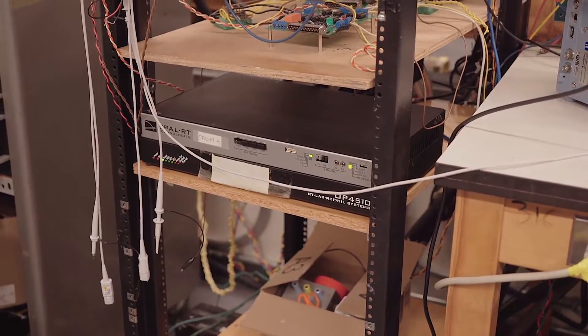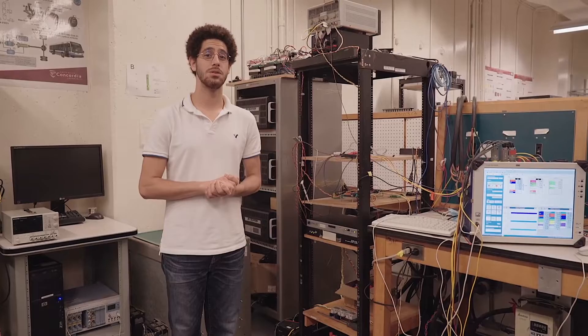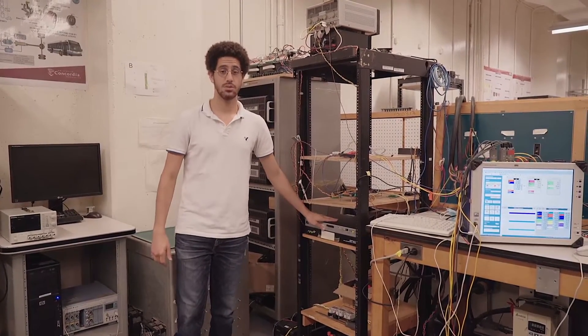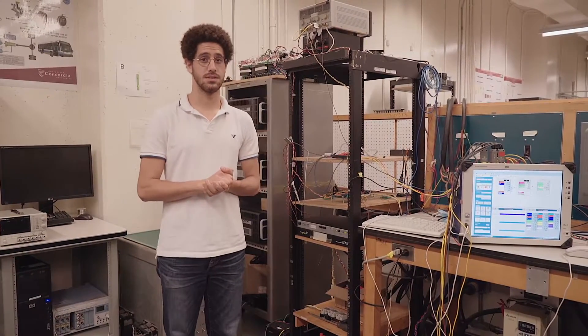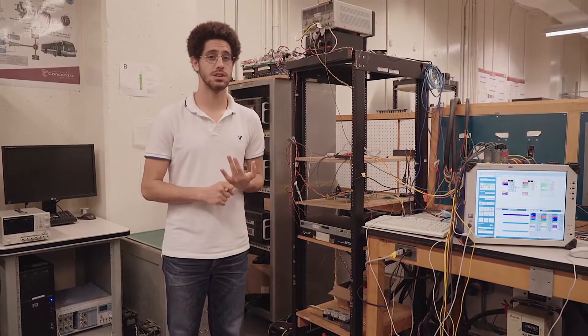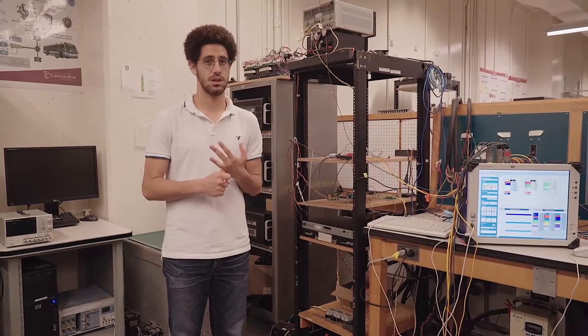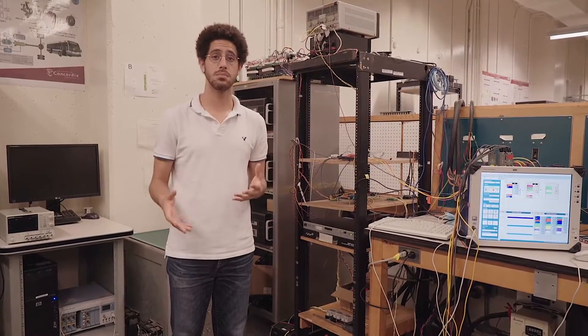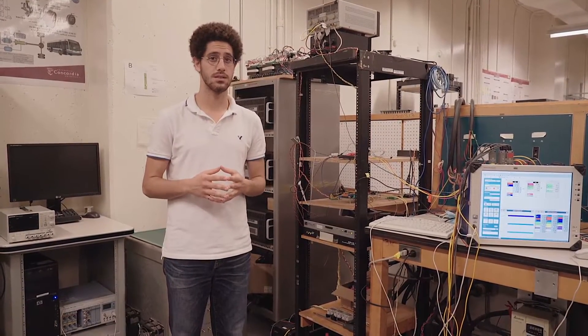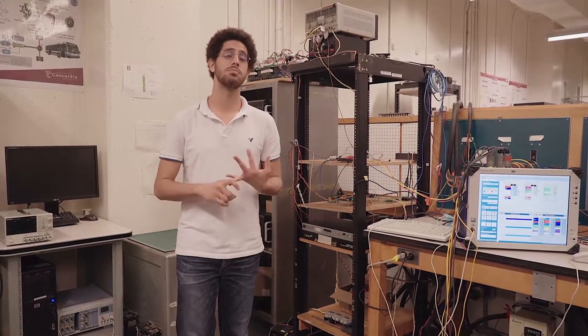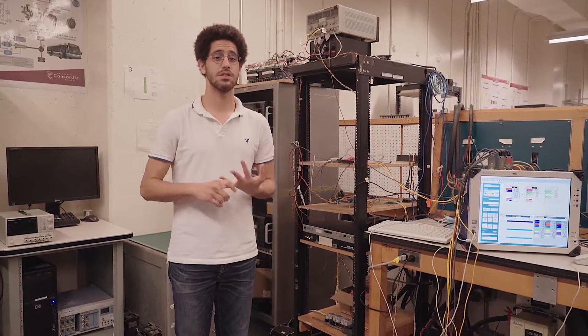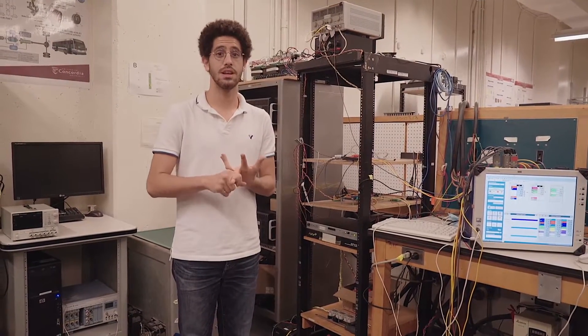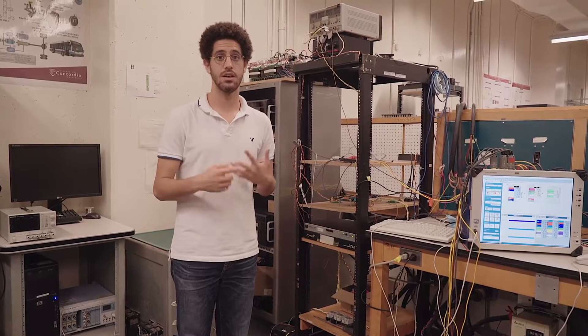At the heart of the power hardware in the loop setup we have OPAL's OP4510 real-time simulator. We have this right here. It's a really good machine for these applications for multiple purposes. Firstly, it's a multi-core machine. You have up to four CPU cores where you can run your simulation model one. This allows you to split your simulated model onto multiple cores and decrease the time step required in the simulation. There's also an FPGA included within this model. This allows you to run very fast data acquisition but also more importantly the machine models that we supply for motor emulation.